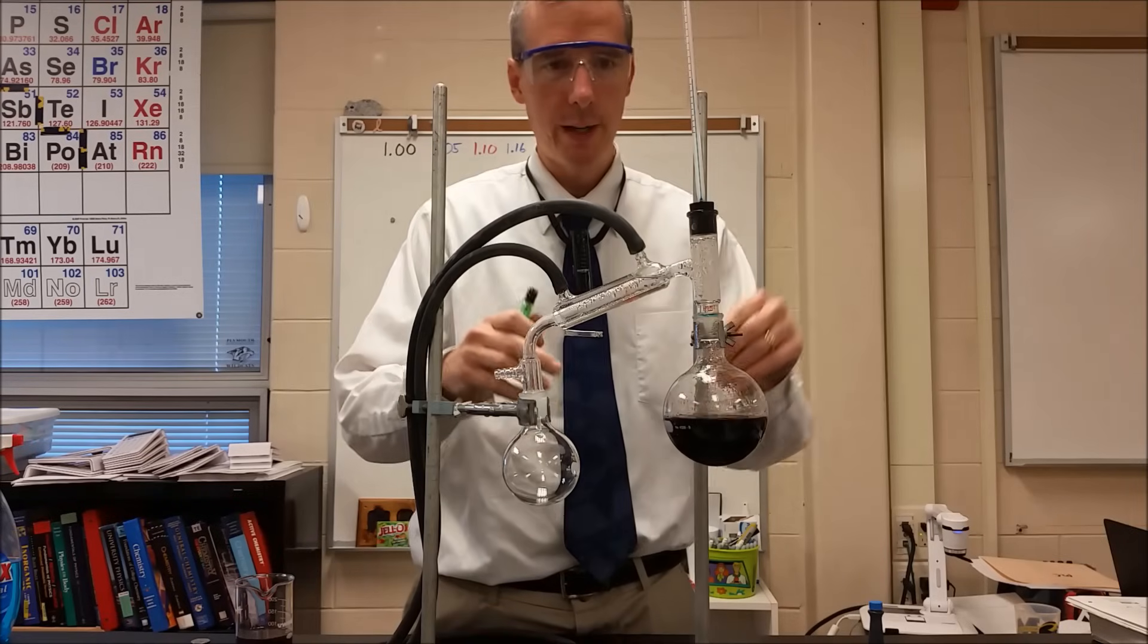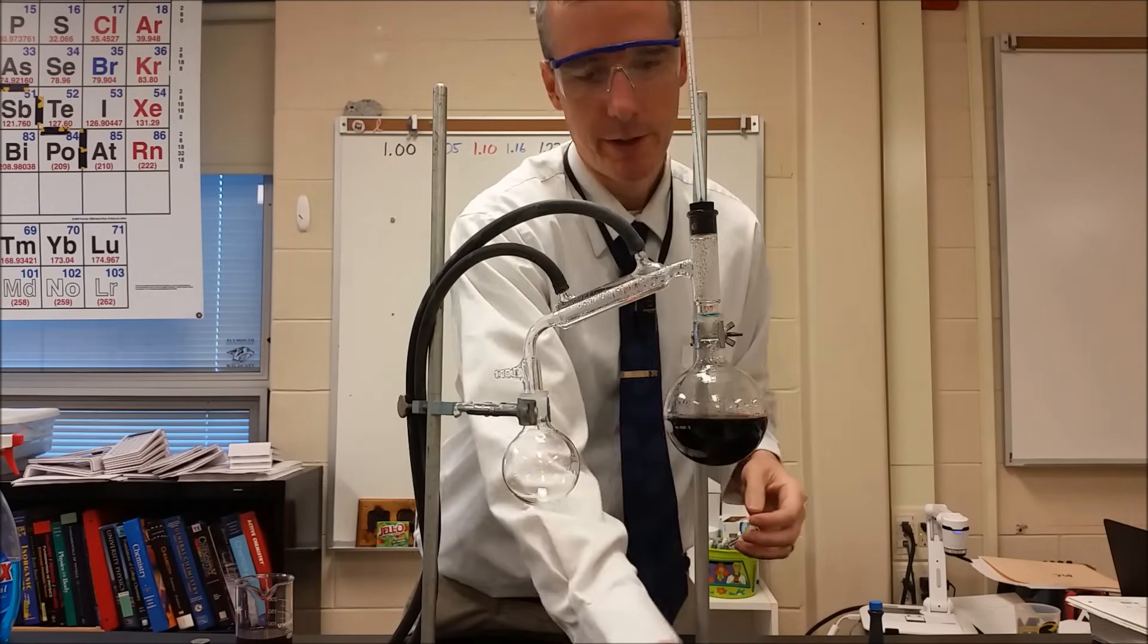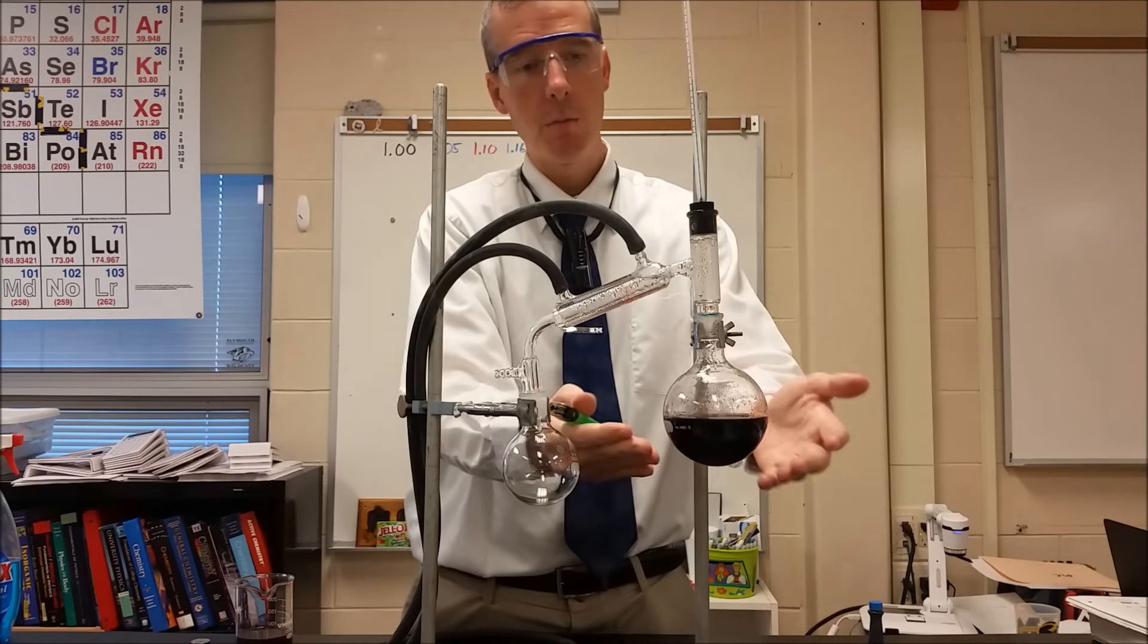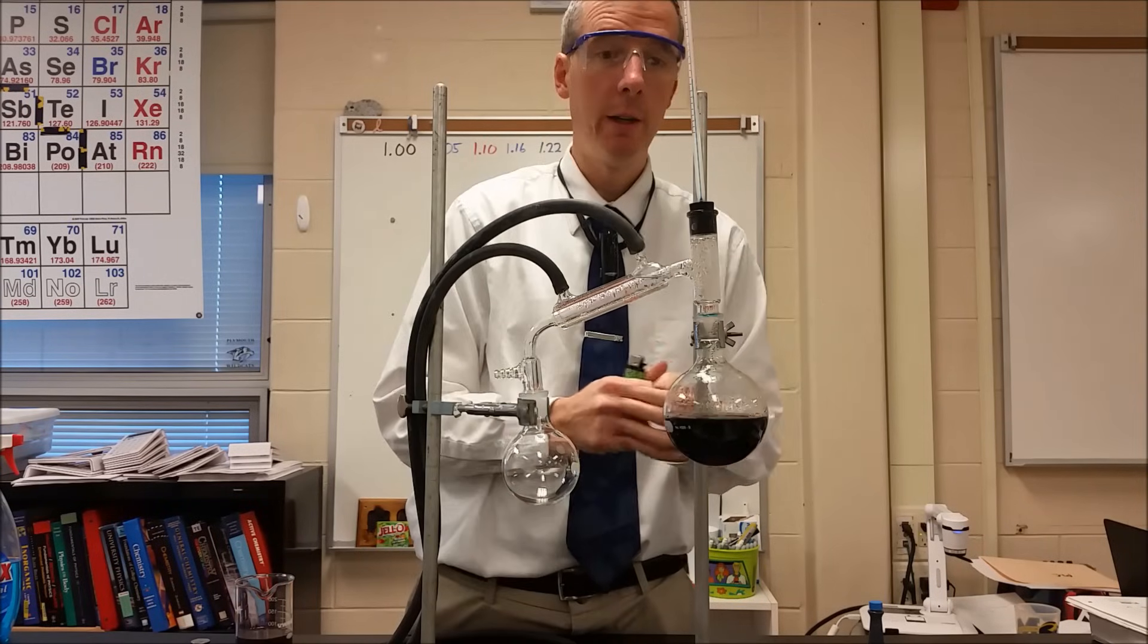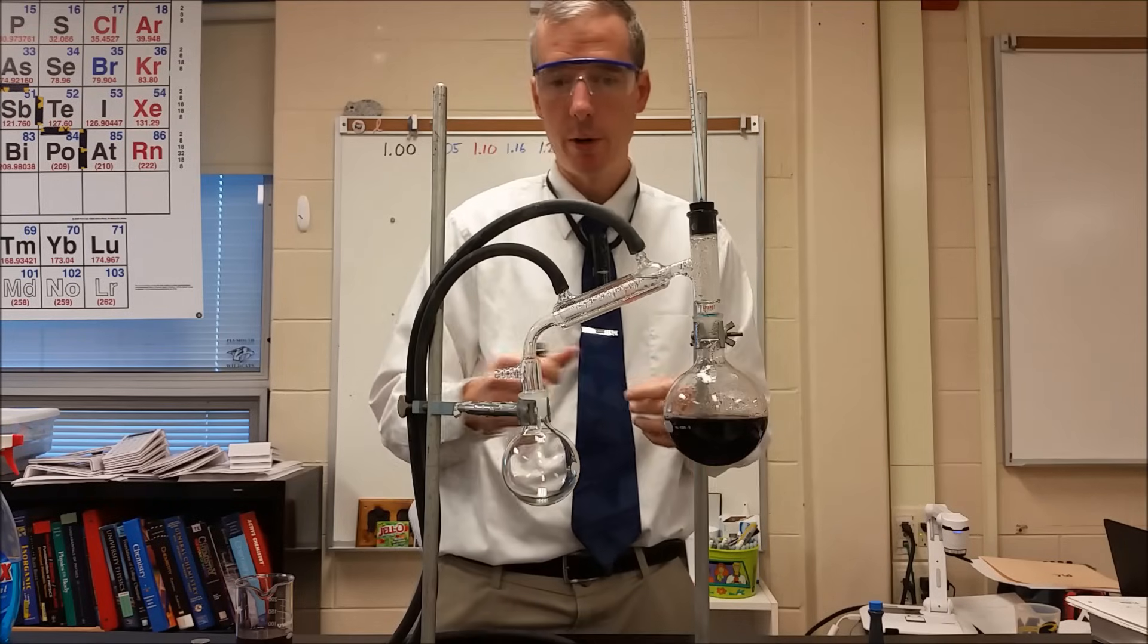This is a distillation apparatus. What we have here is a round bottom flask that has a mixture of water and food coloring in it, and we're going to heat it using a Bunsen burner.